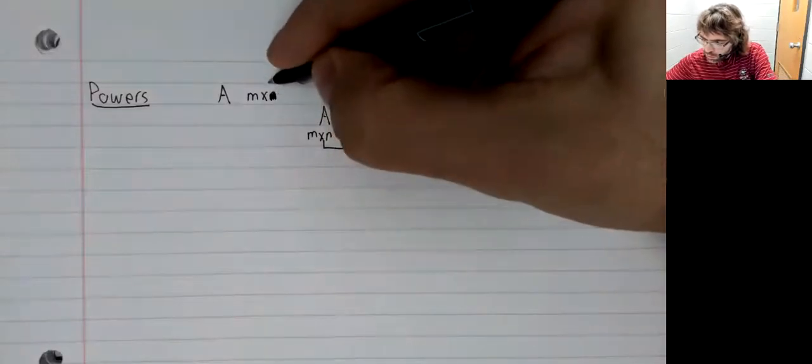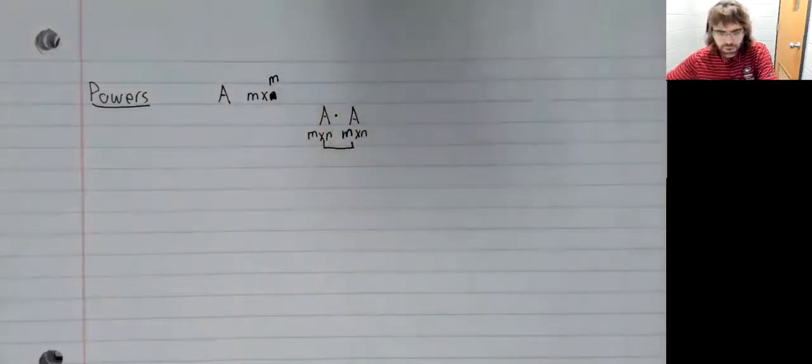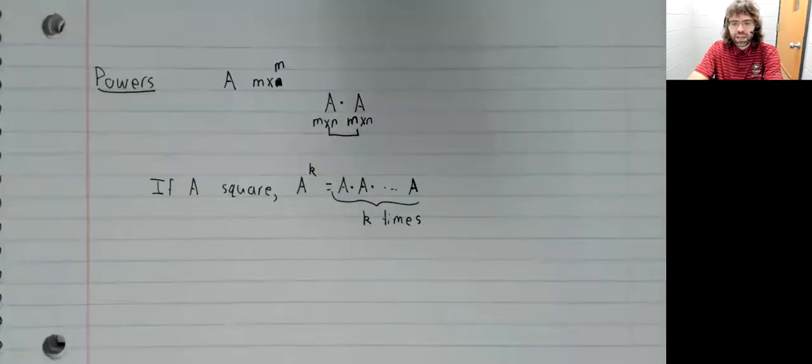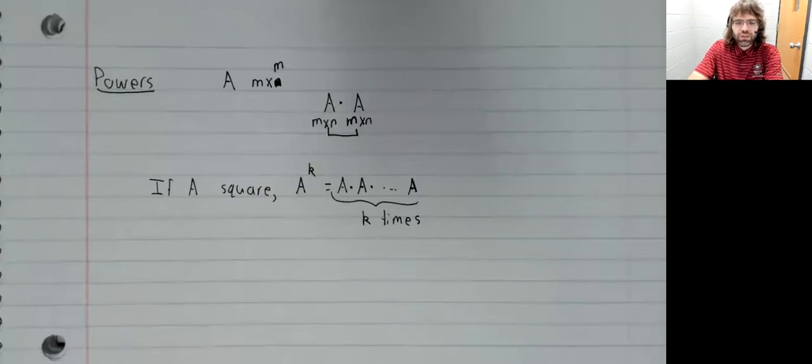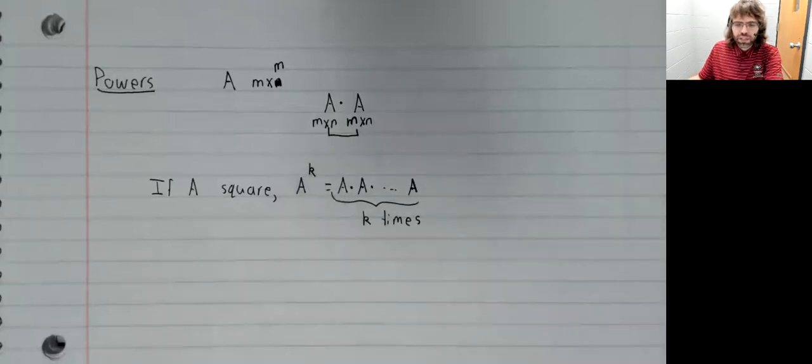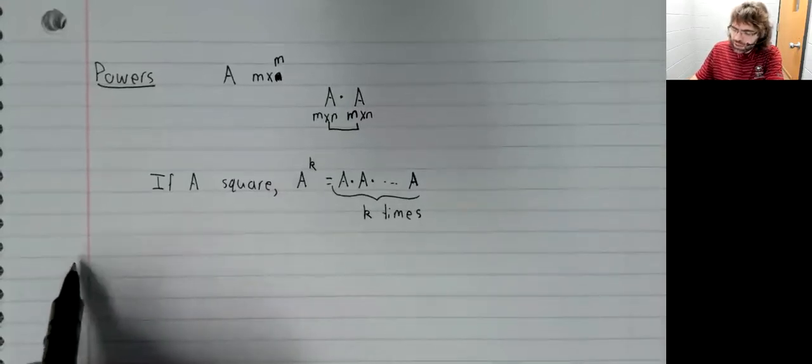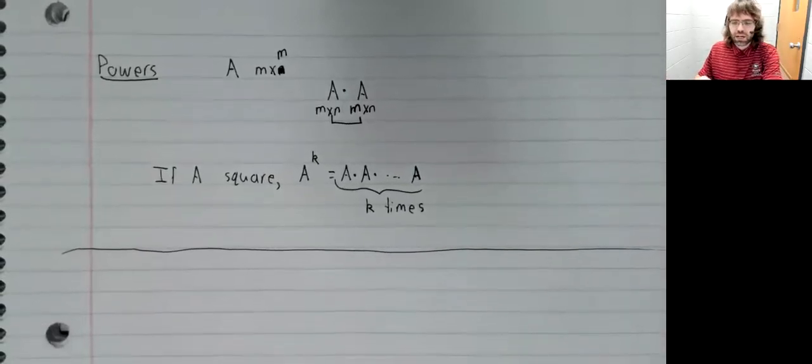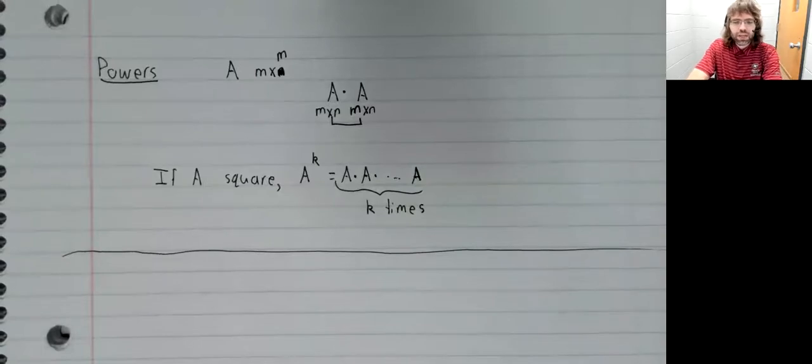which would make A a square matrix. And in general, if A is a square matrix, we can define natural number powers of A in the natural way. A to the power of K is A times itself, K times. And that's all we have to say about powers at the moment.